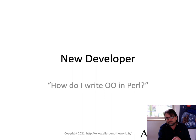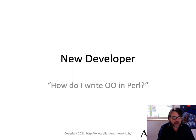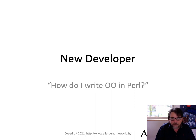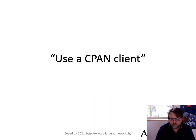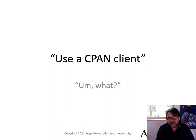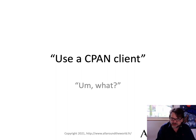So a new developer asks: how do I write object-oriented code in Perl? You can fall back on blessing references — but what the heck is that? Today we tend not to do that. Instead, first you grab a CPAN client. Why? That's not a huge deal — we're used to installing extensions all the time, but for something which should be in the language itself, that's a little bit odd.